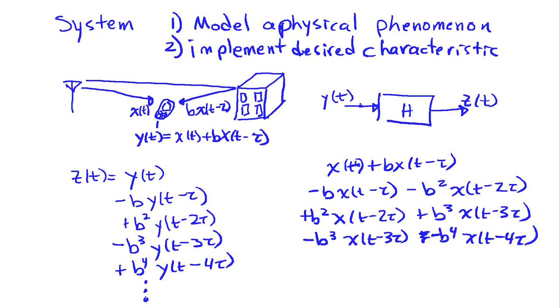So what happens when I combine these delayed and amplitude shifted versions of my output is that I cancel out the echo term. I'm going to first cancel out b x of t minus tau. When I do that cancellation, I introduce another echo, minus b squared x of t minus 2 tau, that'll be canceled by the next term that I add in. And as I continue adding terms in, b cubed x of t minus 3 tau, I get that canceled out, and so on.